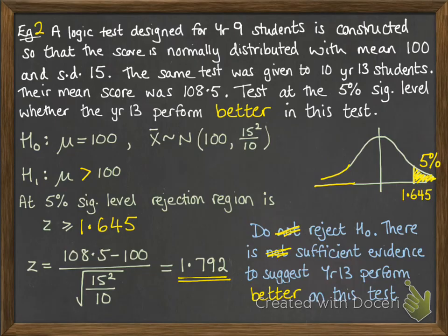So there is sufficient evidence at this level to suggest that year 13 perform better on this test. You can see how adjusting the question and changing the values that you're looking at can actually change the result of whether you accept or reject a null hypothesis.